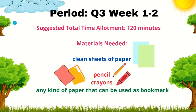This module is good for third quarter, week 1 until week 2. Suggested total time allotment is 120 minutes. The materials that we will need are: clean sheets of paper — that means bent paper, colored paper, or any paper that can be used for our artwork — pencil, crayon, and any kind of paper that can be used as bookmarks, such as a folder.